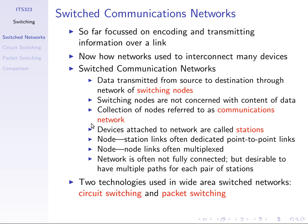We are going to look at two ways for forwarding data through the network: circuit switching and packet switching. Inside packet switching there are two variants — datagram packet switching and virtual circuit packet switching — so we'll see three approaches in total. These are used in wide area switched networks. Most examples are relevant to large networks — across a city, between cities, across a country, or between countries.